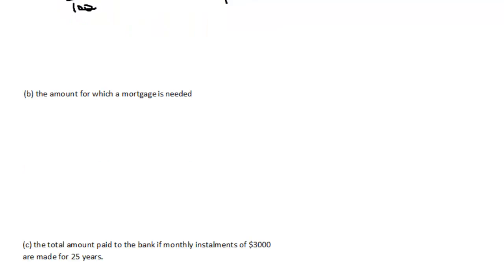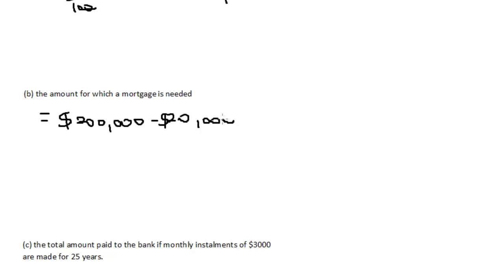Part B asks us to determine the amount for which a mortgage is needed. The mortgage amount equals the asking price minus the deposit: $200,000 minus $20,000, which equals $180,000. That is the outstanding balance — the amount for which the mortgage is needed.